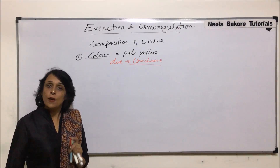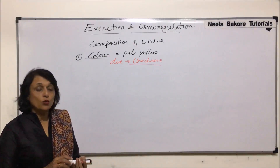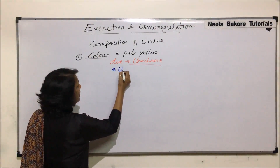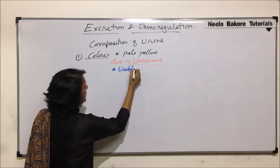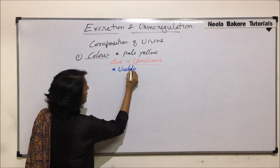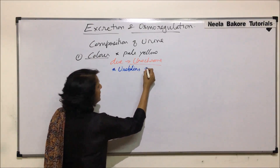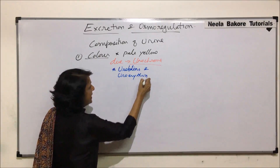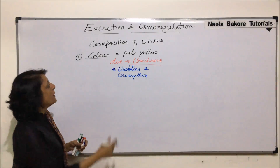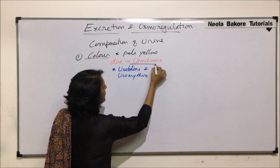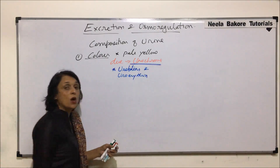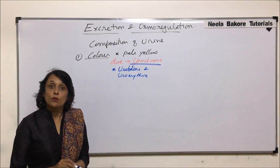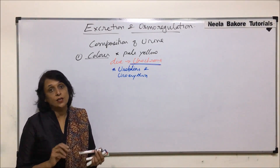Urochrome is formed by the breakdown of hemoglobin. Other than this, there are two more pigments present: urobilins and uroerythrine. They are also present, but the main pigment responsible for the pale yellow color is urochrome. The color of urine may change under certain conditions.